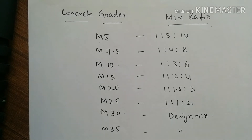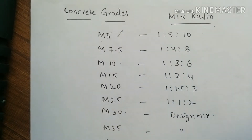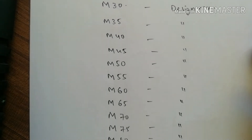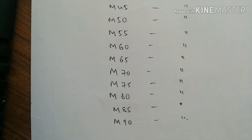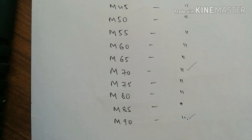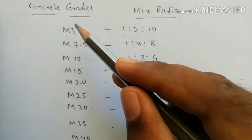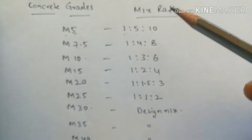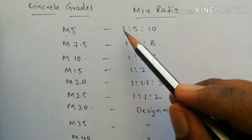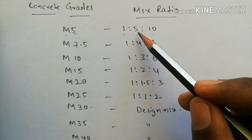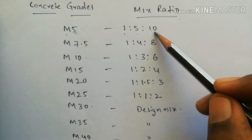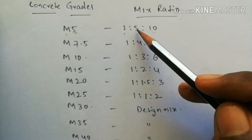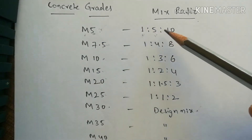The first topic is concrete grades, starting from M5 up to M90. For M5 concrete grade, we use Mix 5. The compressive strength of concrete is checked at 28 days. M5 mix ratio is 1 cement : 5 fine aggregate : 10 coarse aggregate, i.e., 1:5:10.